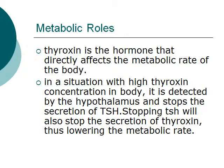Thyroxin is the hormone that directly affects the metabolic rate of the body. In a situation where high thyroxin concentration is in the body, it will be detected by the hypothalamus and stops the secretion of TSH. Stopping TSH will also stop the secretion of thyroxin, thus lowering the metabolic rate.